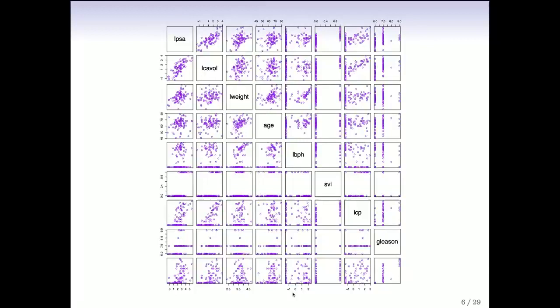This is a scatterplot matrix which actually shows the data. On the diagonal is the name of each of the variables, and each little plot is a pair of variables. So you get, in one picture, a view of all the data at once for a relatively small number of variables. You can see the nature of the data, what variables are correlated, and so on. In this particular case, the goal was to try to predict the PSA from the other measurements.